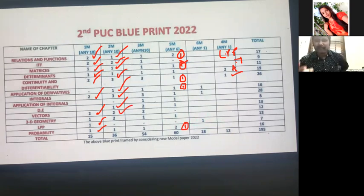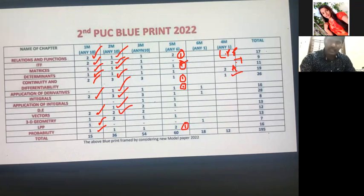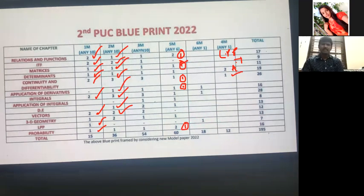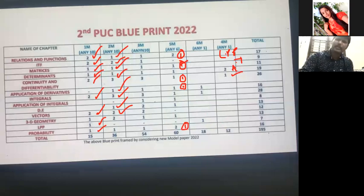For 3D Geometry two-mark questions: whatever question they give, if you know it, do it; otherwise leave it. For Probability two-mark questions: A and B are independent — find P(A∩B), find P(A∪B), or related type questions. If 3D and Probability are too difficult, you can make a choice and skip them. Out of 18 two-mark questions given, you need to answer only 10. Try to attempt at least 13.